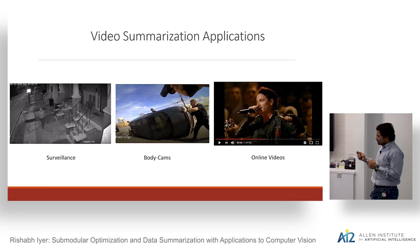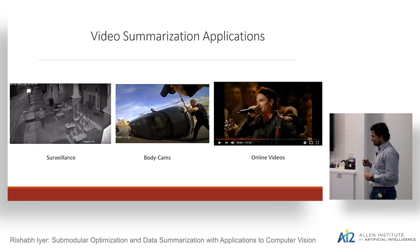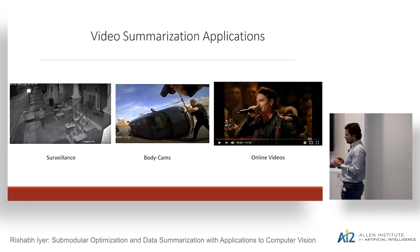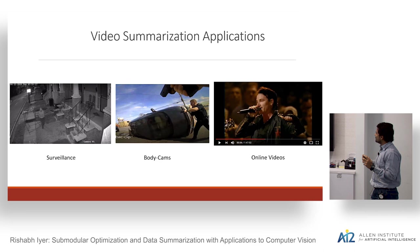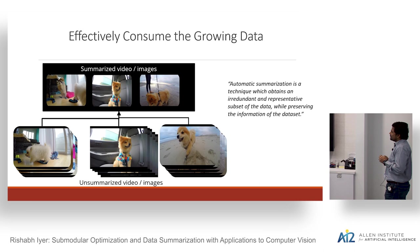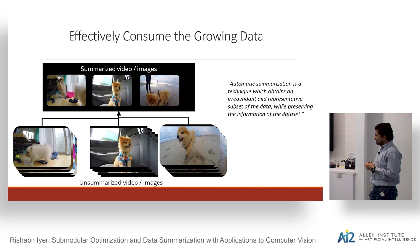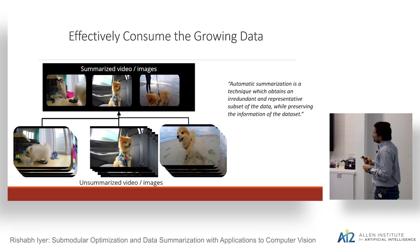Each of these problems has slightly different flavors of video summarization. In surveillance, we are interested in different events and getting a quick visual summary of the set of events. In the case of online videos, we are probably very interested in highlights or important visual events to capture in the summary.